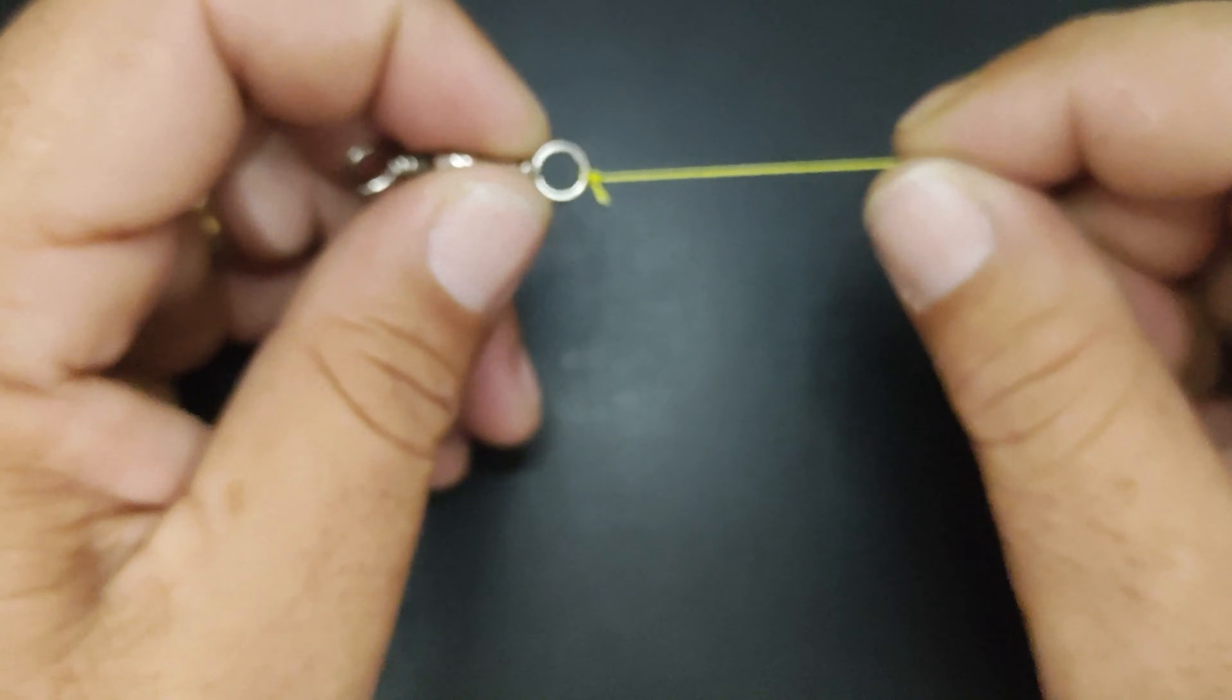E aí é só puxar o nó e arrochar ele. Super resistente. Aí você corta a sua ponta morta que está aqui. E o nó fica assim, pessoal. Deixa eu focar aqui pra vocês.